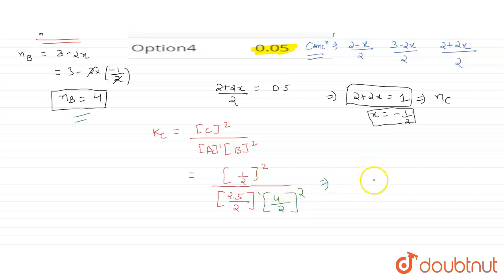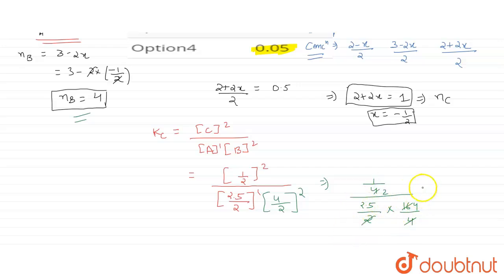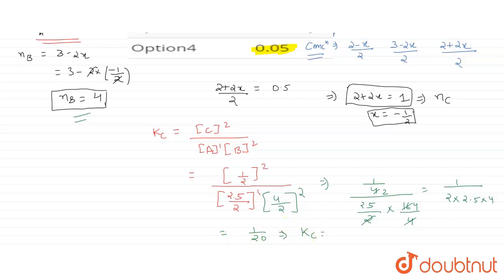Therefore Kc = (1/4) / ((2.5/2) × (16/4)). Simplifying: it becomes 1 / (2 × 2.5 × 4) = 1/20, which equals 0.05.